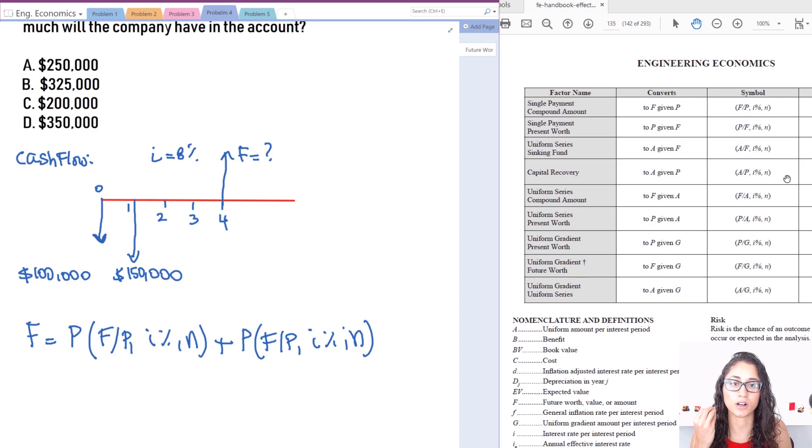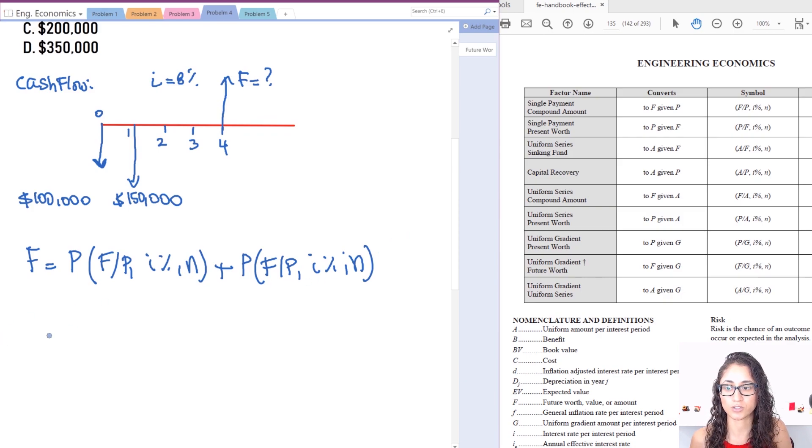Now, like I mentioned in the previous video, if you use either one of these equations you should get the same answer. It just comes down to matter of time if you have the time to calculate this during the exam, and also if you are given the interest rates that's on the table. If it's not given to you, then you have to use these equations.